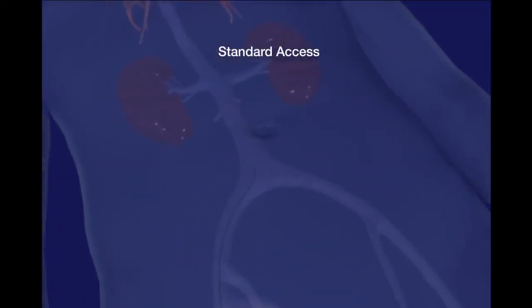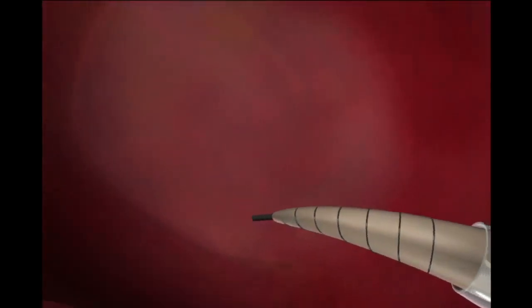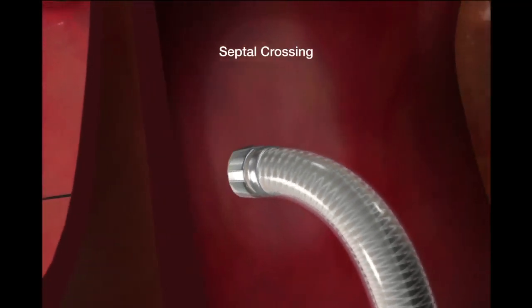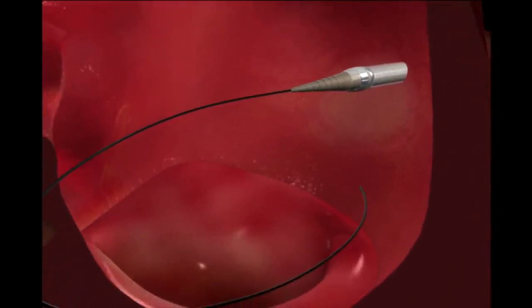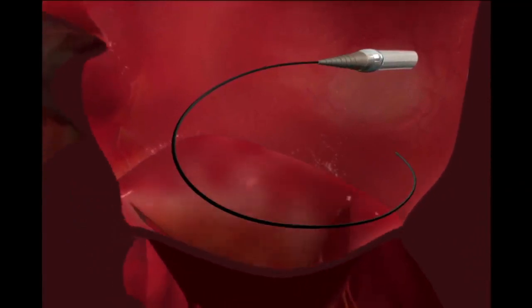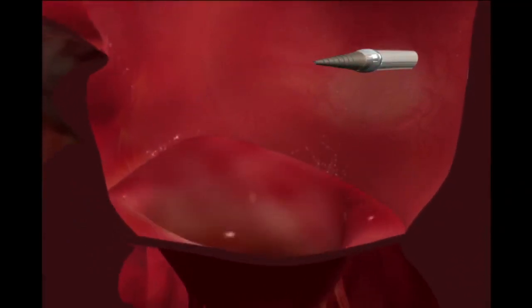The catheter is introduced over a guide wire that has been placed using standard techniques. The dilator is used to gradually advance the guide into the left atrium. The guide wire and dilator are removed.